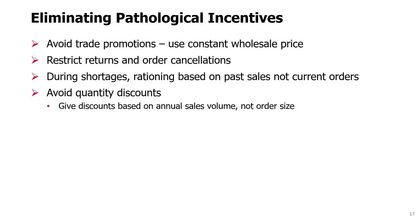The third strategy to reduce the bullwhip effect is eliminating pathological incentives. Trade promotions cause forward buying and that increases the bullwhip effect. The obvious remedy is to avoid trade promotions if possible, and instead use a constant wholesale price. This might be difficult in some industries where trade promotions are expected, but from the perspective of supply chain management, trade promotions should be avoided.